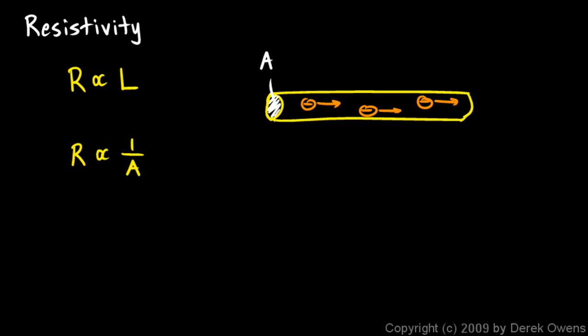If you have a big number in the denominator for the area, which means the wire is really fat, that will give you a smaller resistance. So thick wires have less resistance, and that should make sense.